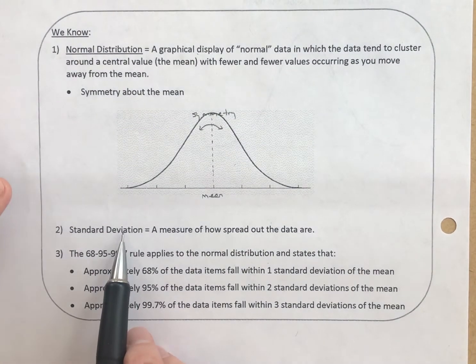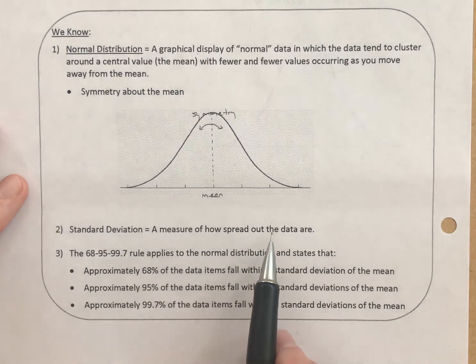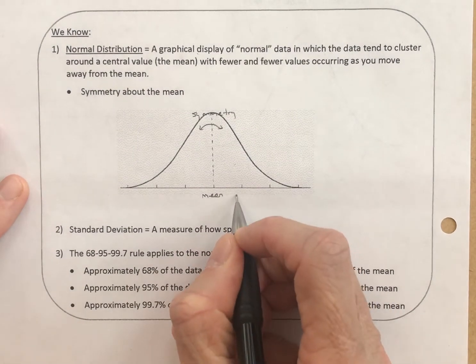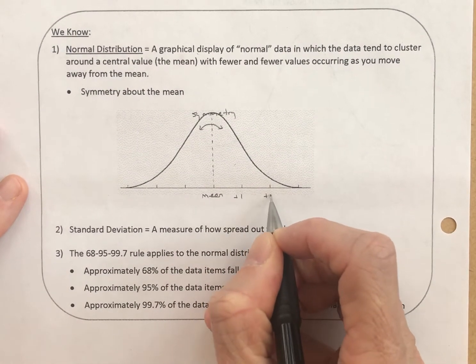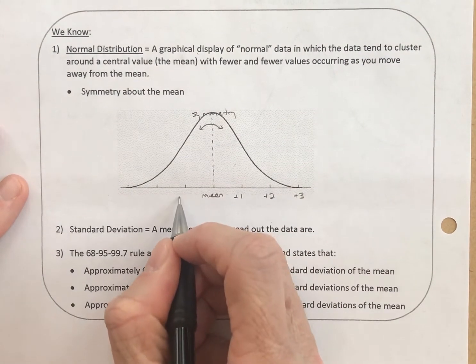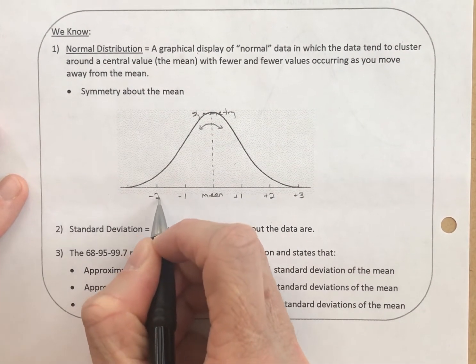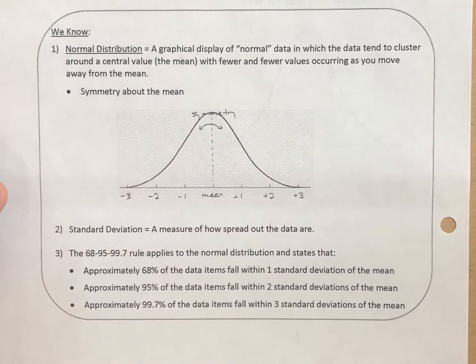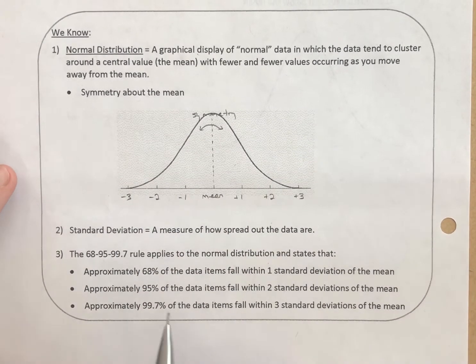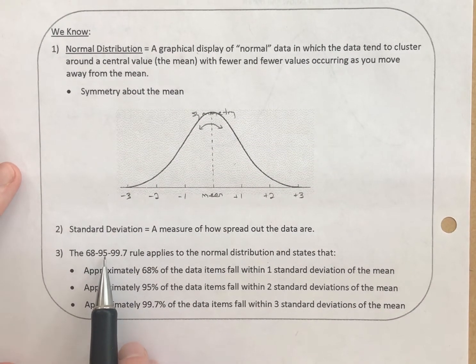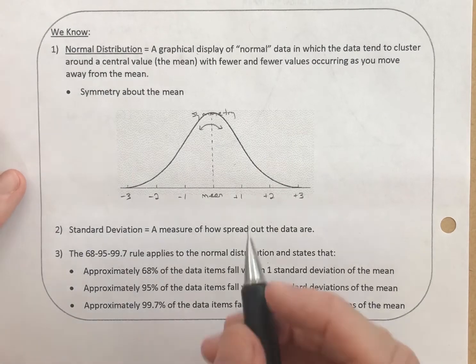We know what a standard deviation is - a measure of how spread out the data are. We go up plus one standard deviation, plus two, and plus three. Go down one standard deviation, two, and three. And we know the 68-95-99% rule.